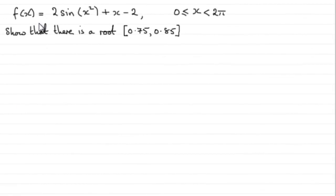Now, for this part of the question, we're given that f of x equals 2 sine of x squared plus x minus 2, and x is greater than or equal to 0 but less than 2 pi. And we've got to show that there's a root for x between 0.75 and 0.85.